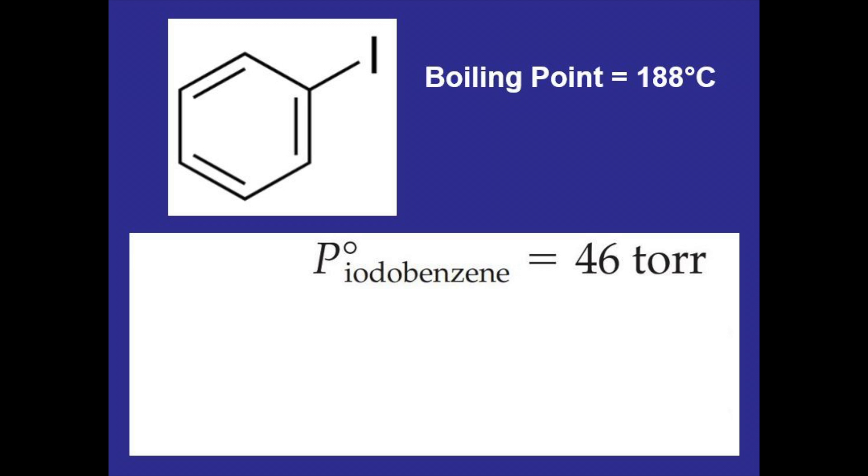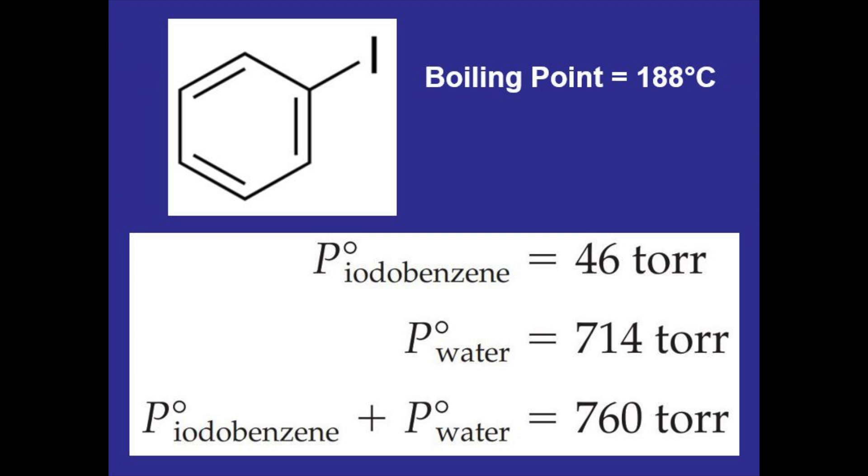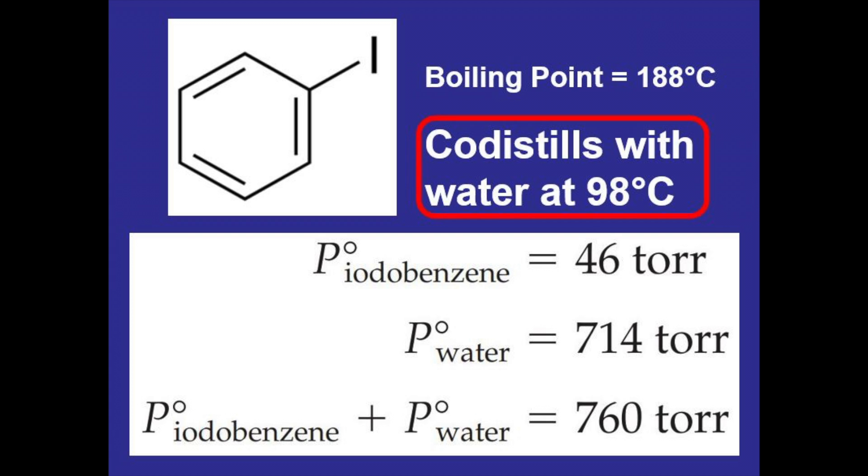Here's an example of how this works using iodobenzene which has a boiling point of 188 degrees Celsius. Its vapor pressure at 98 degrees Celsius is 46 torr and the vapor pressure of water at 98 degrees Celsius is 714 torr. Together those add up to 760 torr which equals atmospheric pressure. So this compound will co-distill with water at 98 degrees Celsius rather than its usual boiling point of 188.